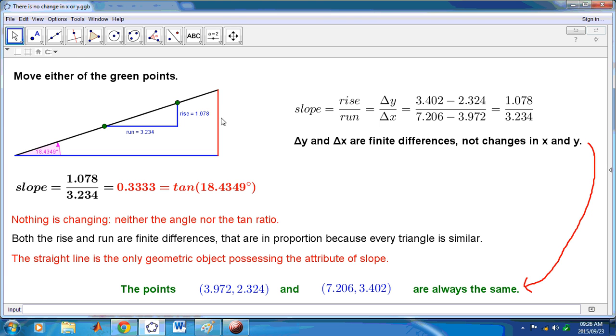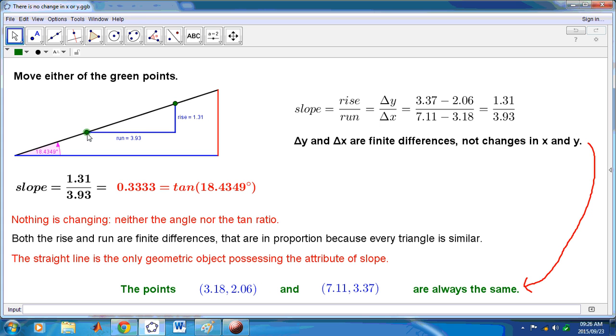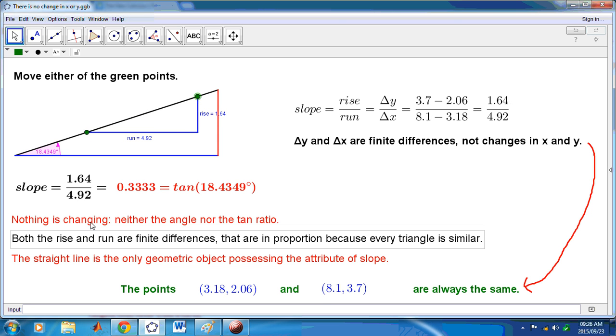So, in this picture here that I have on the screen, I can move any of these green points. And you will instantly notice that these triangles here are similar, these right-angled triangles. So, while the rise and run are different finite differences, they are not changes in x and y. These are all predetermined. We can put this here and there's a finite difference there and a finite difference there for any straight line. Nothing is changing. Yes, nothing is changing. Neither the angle nor the tangent ratio.